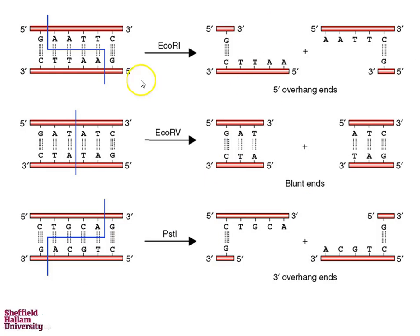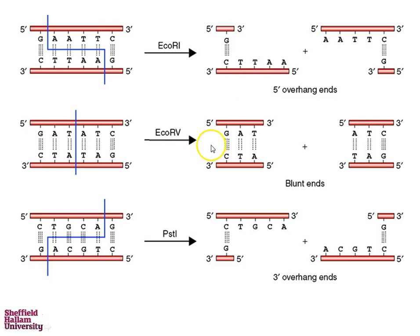When a restriction enzyme such as EcoRI cuts, it recognises a specific sequence of nucleotides — in this case, G-A-A-T-T-C — and cuts that, leaving a 5' overhang to the DNA. We also have blunt-ended cutters such as EcoRV, which recognises the sequence G-A-T-A-T-C, cleaves it, and leaves a blunt end with no overhang.